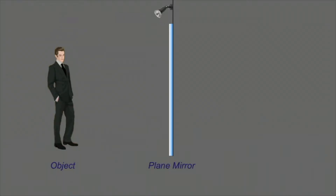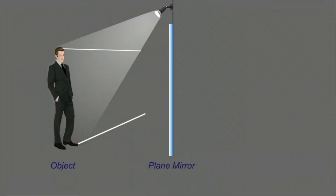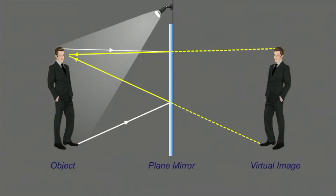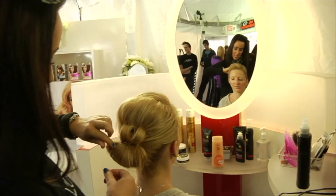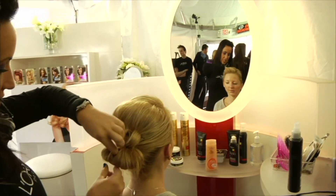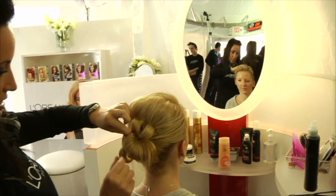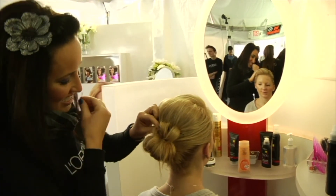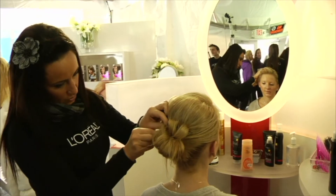The law of plane mirrors states that the virtual image is always the same distance behind the mirror as the object in front of the mirror. The image is the same size as the object it reflects. However, the mirror switches the image front to back — it's the same as looking at the front of the object, but from the perspective of someone behind the object.